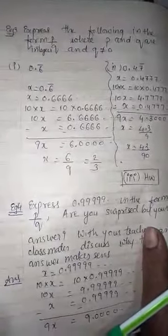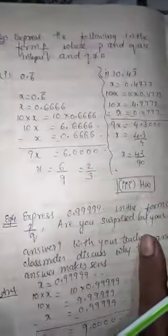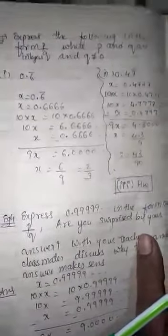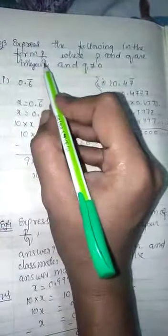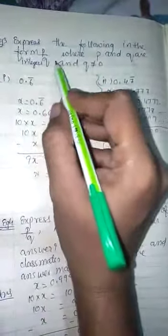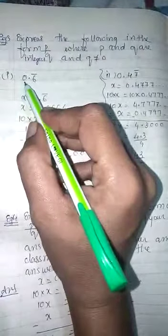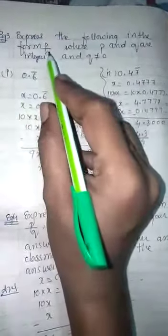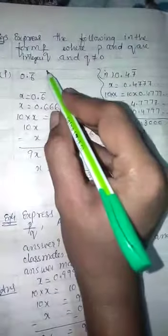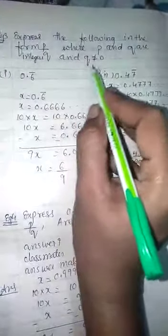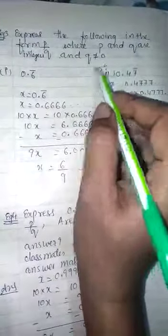Hello children, let us continue with exercise 1.3. We will do example number 3: express the following in P upon Q form. You are given some decimals, and you have to write them in P upon Q form where P and Q are integers and Q is not equal to 0.